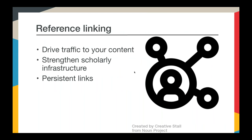We ask you to do this because your primary connection to the Crossref community is through building these links. You link out to members and they in turn link back to your content. Most consumers of your content expect linked references at this point, and linking with persistent identifiers like Crossref registered DOIs provides persistence — you can trust that the links you create using DOIs will continue to link for the foreseeable future. You also don't have to work out agreements with other publishers for reciprocal linking. When you create these links, you make connections that help to strengthen scholarly infrastructure and drive traffic to your content.